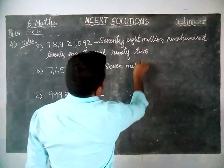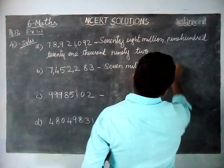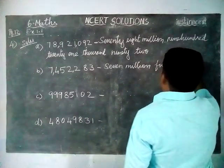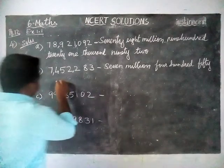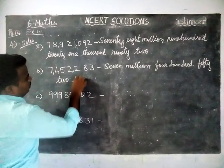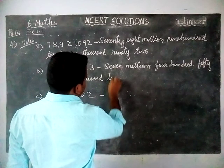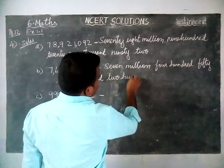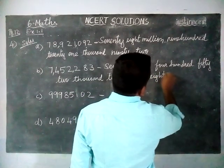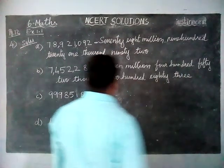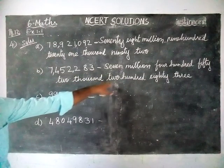...seven million, four hundred fifty-two thousand, two hundred eighty-three. So the second number is 7,452,283.